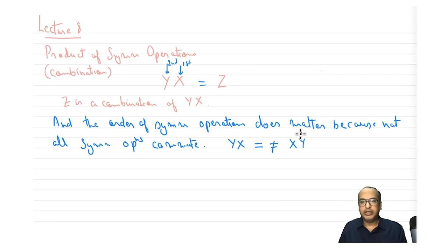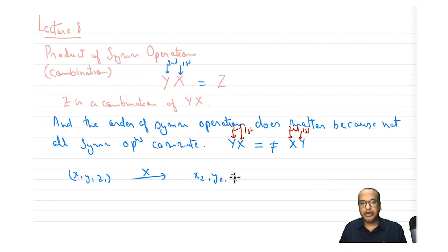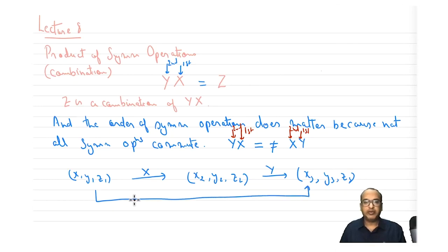In y·x, x is the first operand and y is the second; in x·y, x is the first and y is the second. For example, if x₁y₁z₁ is the coordinate of a given point, and by operating with x we take it to x₂y₂z₂, and again by operating with y we take it to x₃y₃z₃, then if a symmetry operation z can directly take x₁y₁z₁ to x₃y₃z₃, z is called a combination of y and x in that order.